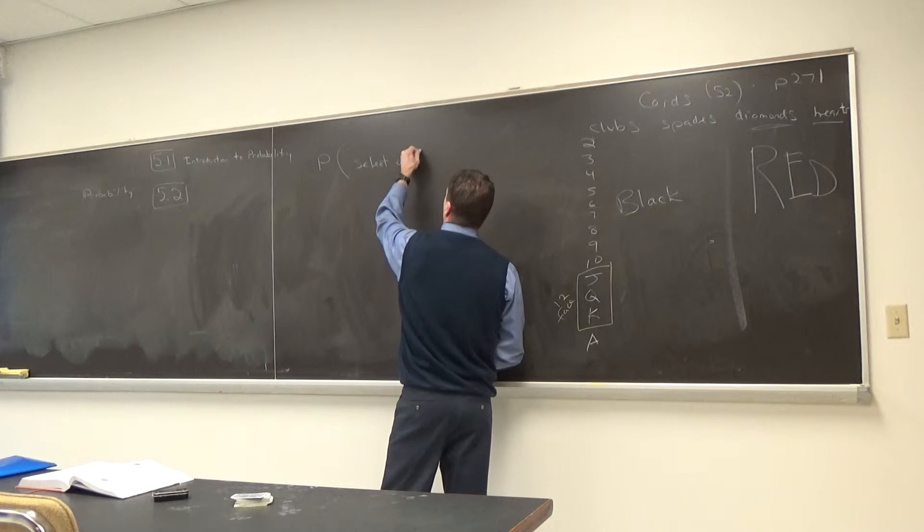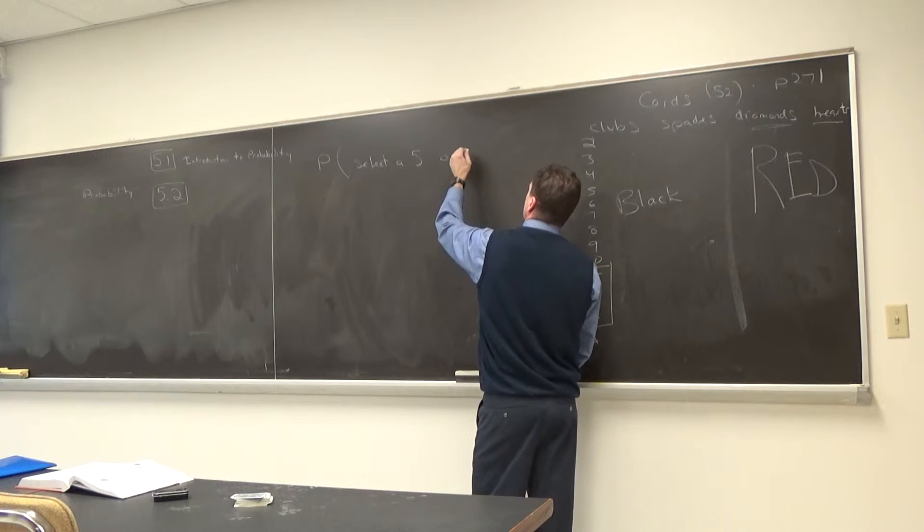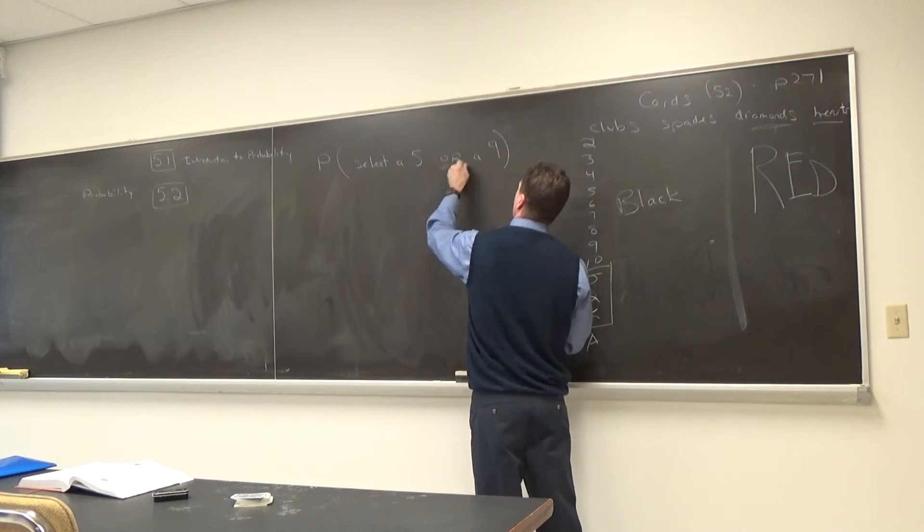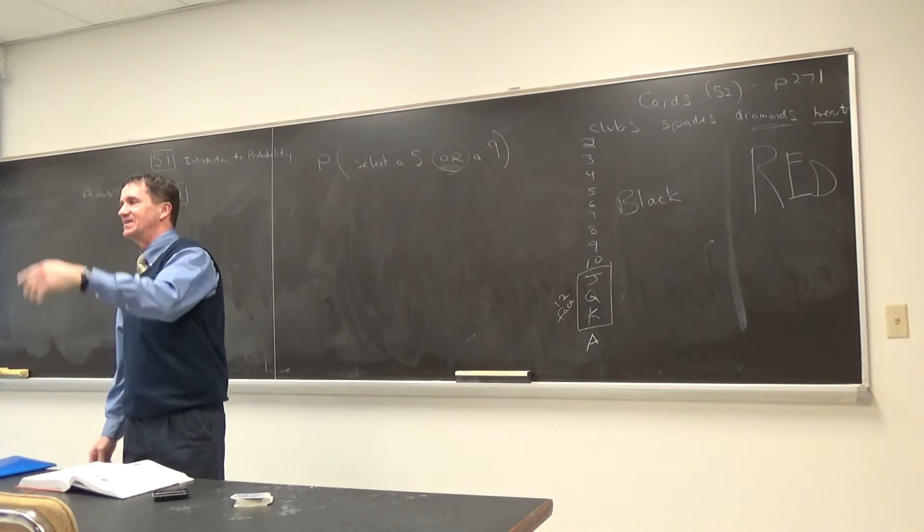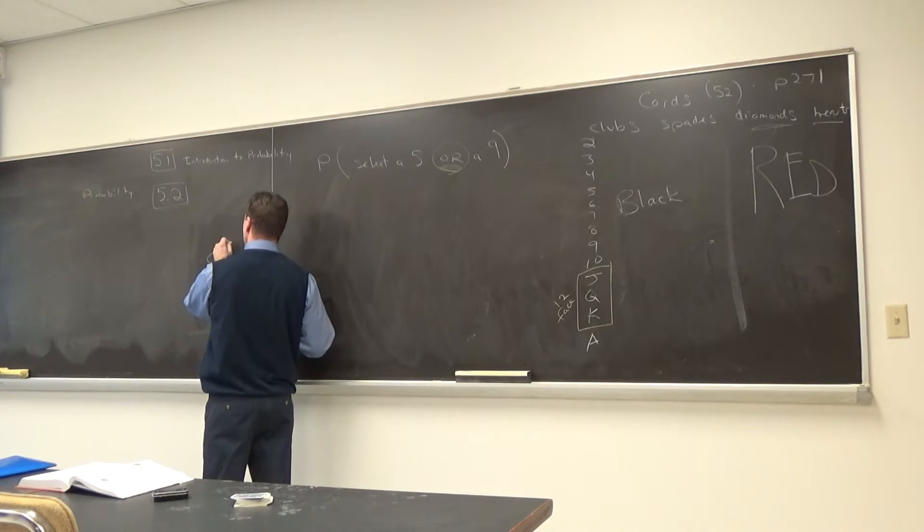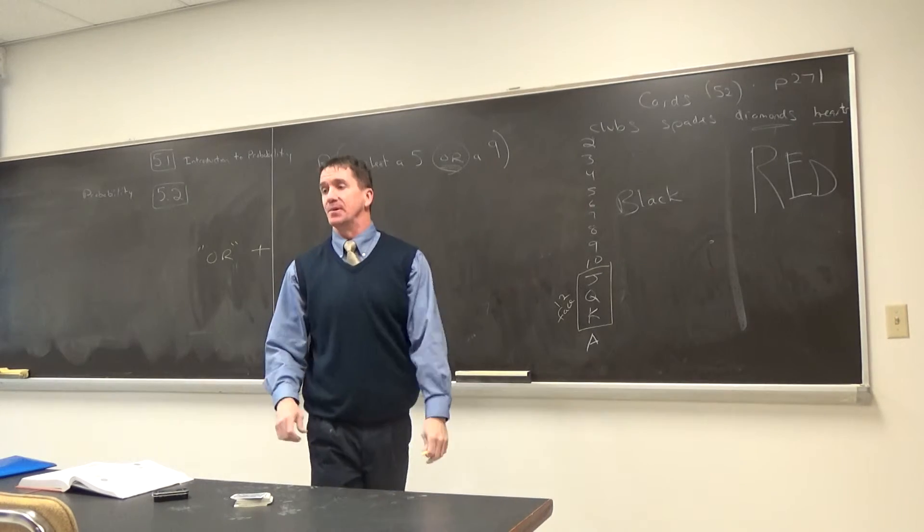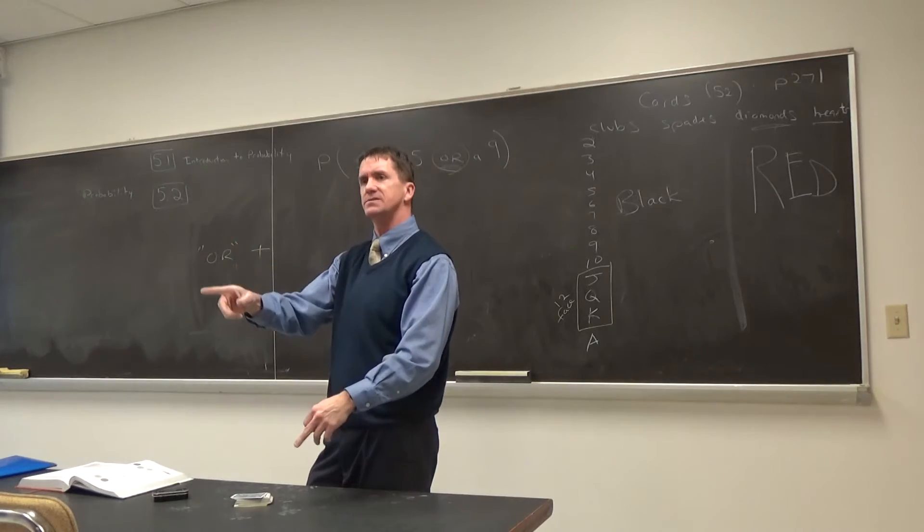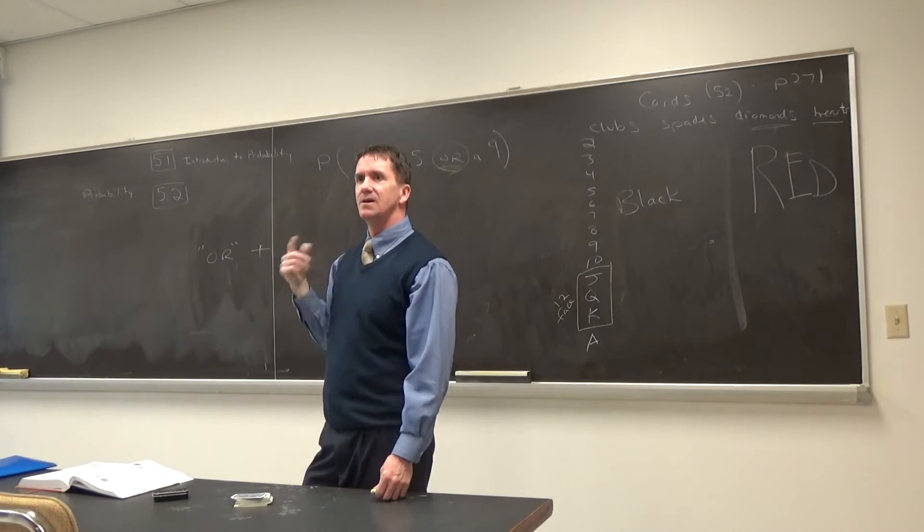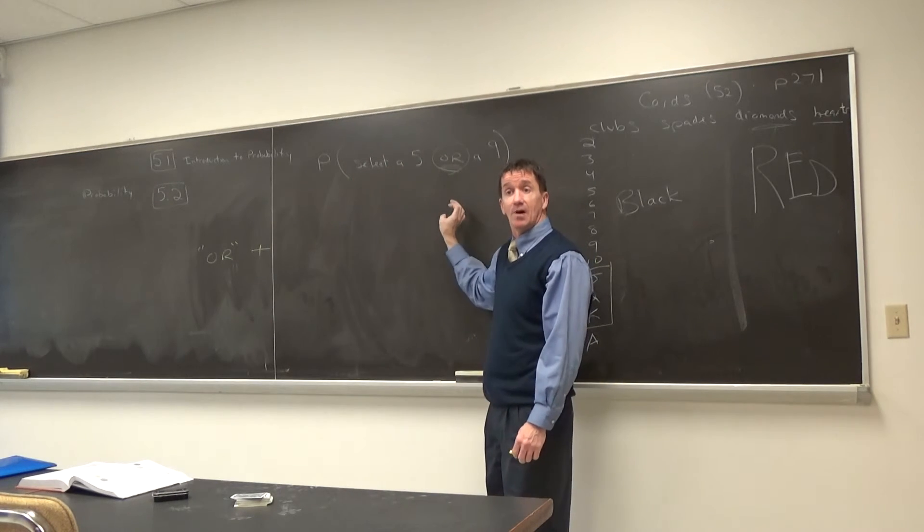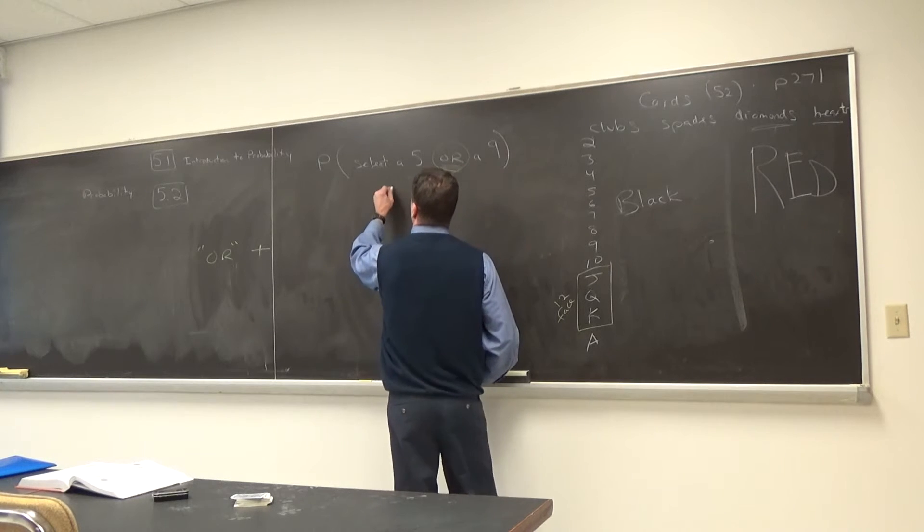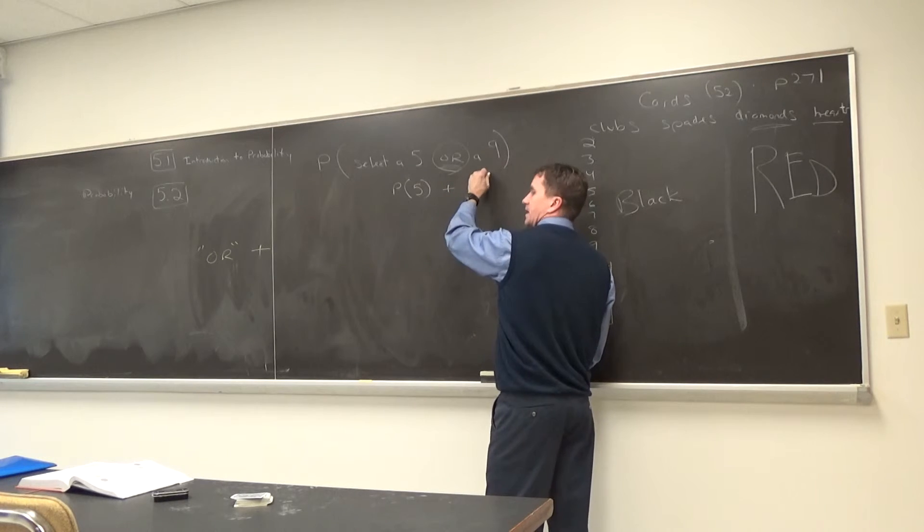So now, my next one. What's the probability I select a five or a nine? Now this is a new word. So let me circle this. Or. The two words you hear with probability: or and and. Here comes this word or. When you hear this word or, basically I'm not making a rule up here, but this word or, when you hear it, you're basically adding probability. When you hear this, what's the chances this or this occurs? I want you to think addition. I want you to think summation. I'll put the rules up eventually. But that's what we're thinking. Like in this case, I'm gonna have to add these two probabilities.